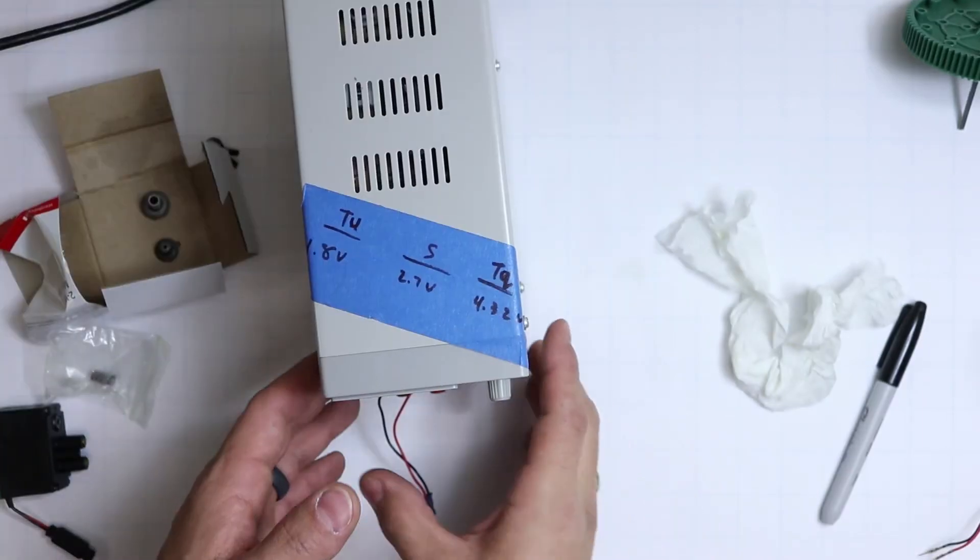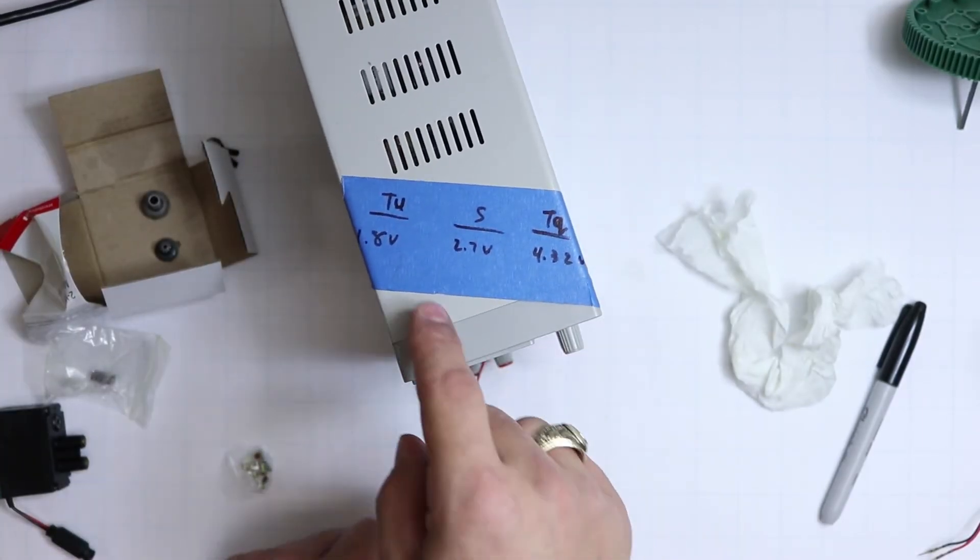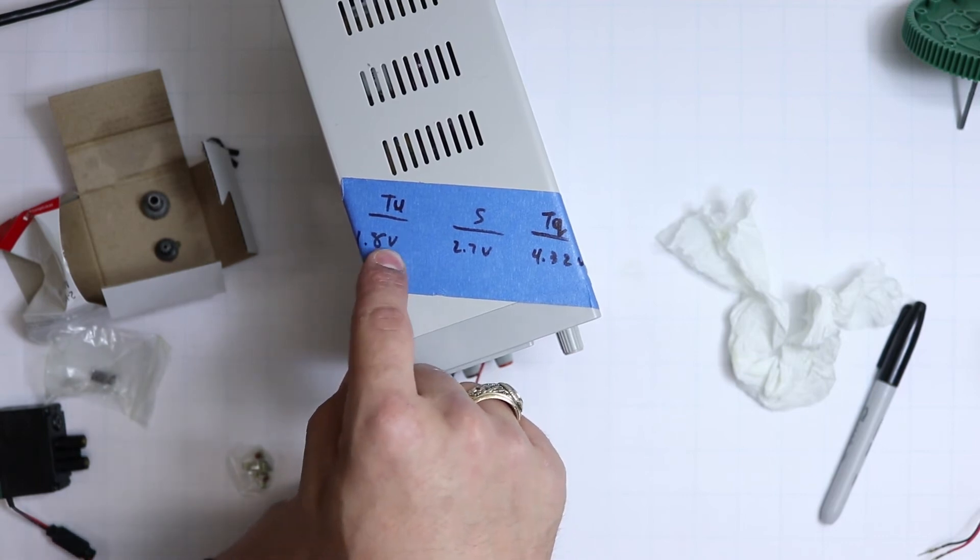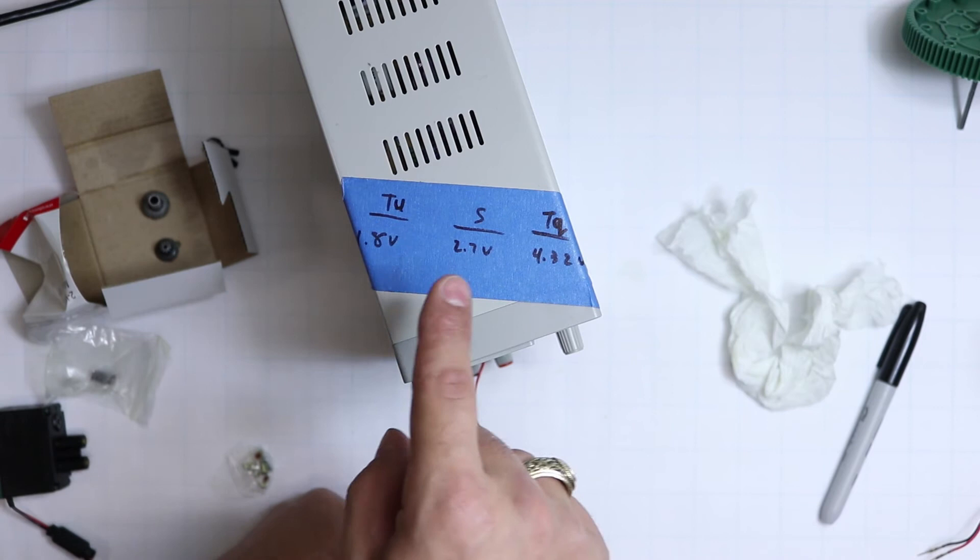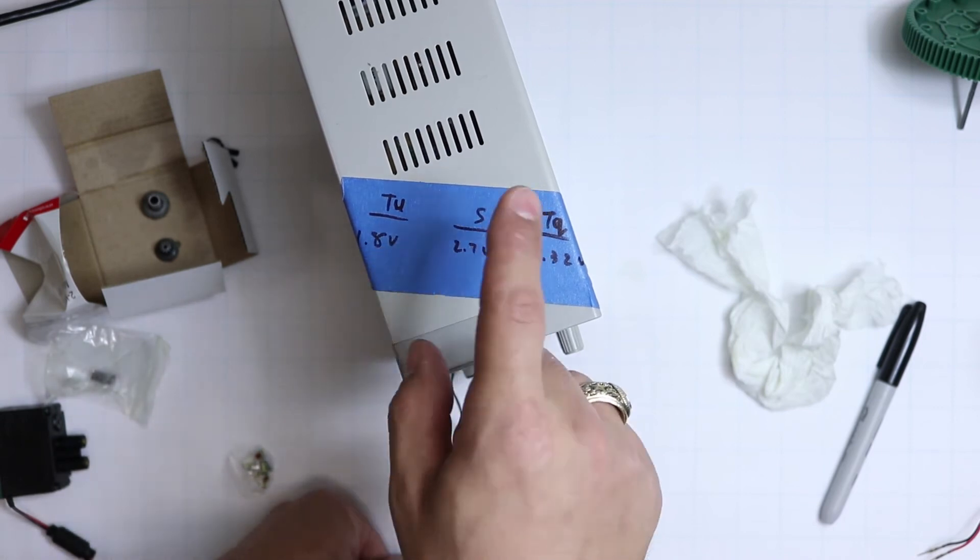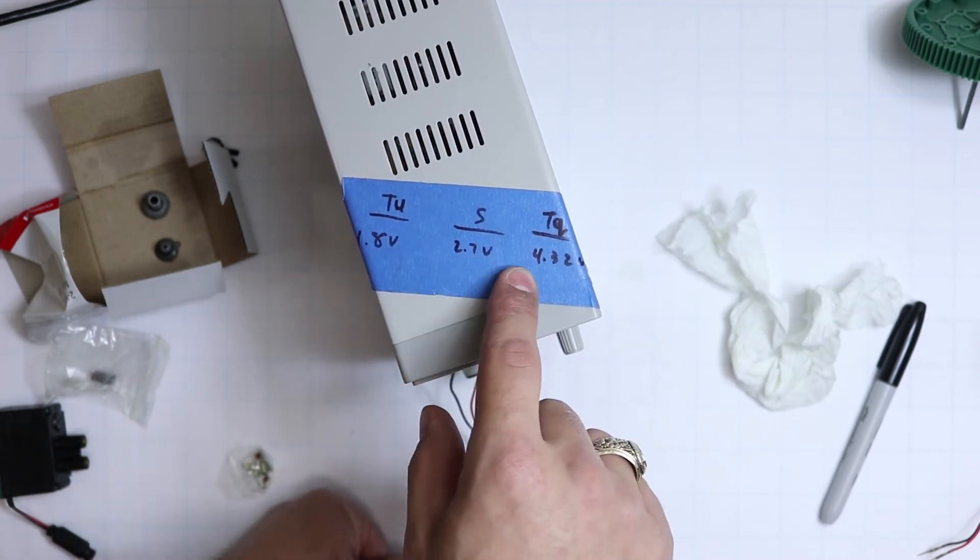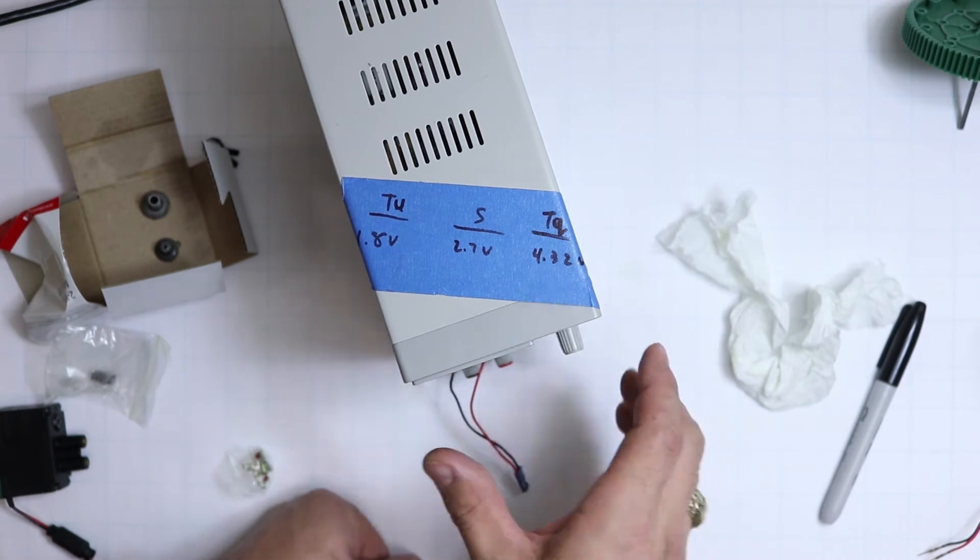All right, you can see on our power supply right here, we've got some information. Turbo 1.8 volts, that's going to be our calculation to figure out that it's going to go one revolution per second at 1.8 volts. Speed is going to be 2.7 volts, and then torque will be 4.32 volts.